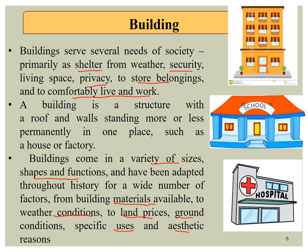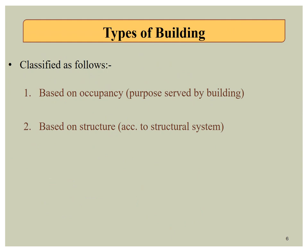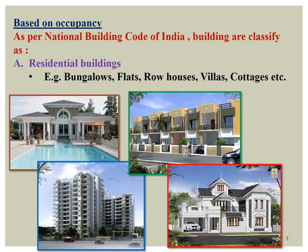Now, seeing the classification of buildings, we are classifying buildings based on two parameters: first, based on occupancy or purpose the building is serving; second, based on structure. As per the National Building Code of India, classifying by occupancy — first is residential buildings, such as bungalows, flats, row houses, and villas.